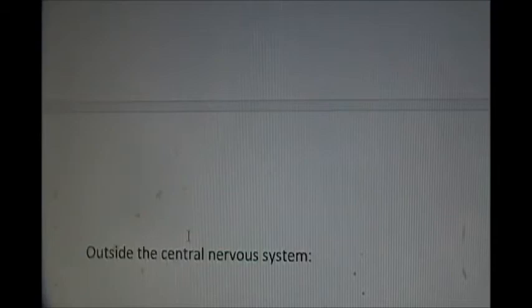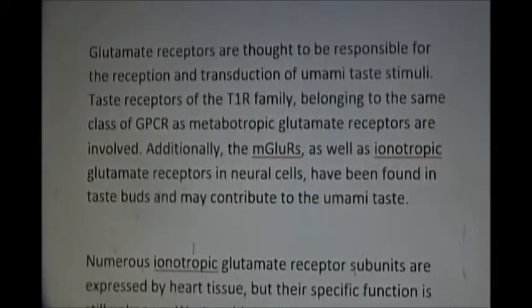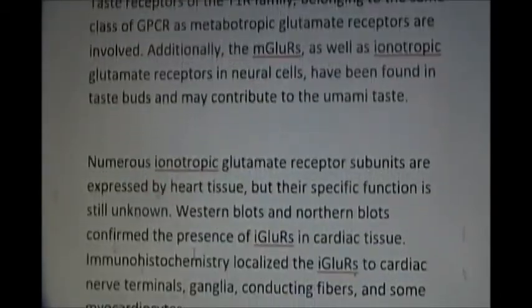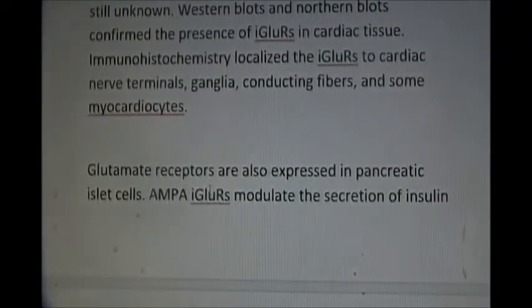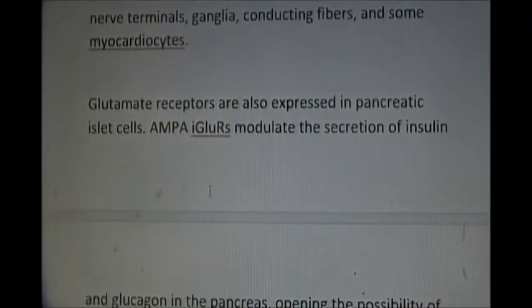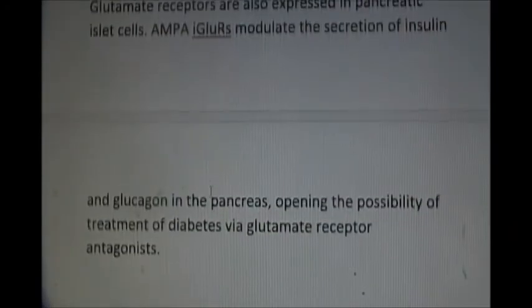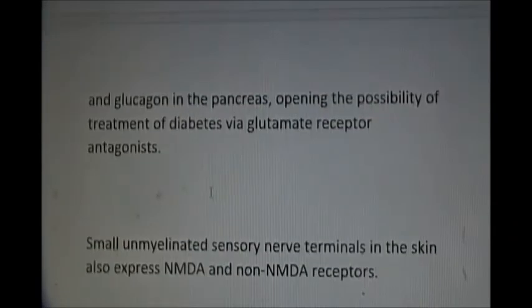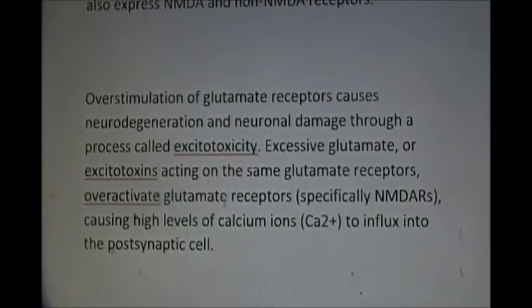Glutamate receptors are not only present in the CNS but also outside it. They are present in cardiac tissues — the ionotropic glutamate receptors — and are also present in the pancreatic islets, where they modulate the secretion of insulin and glucagon. They are also present in sensory nerve terminals in the skin.